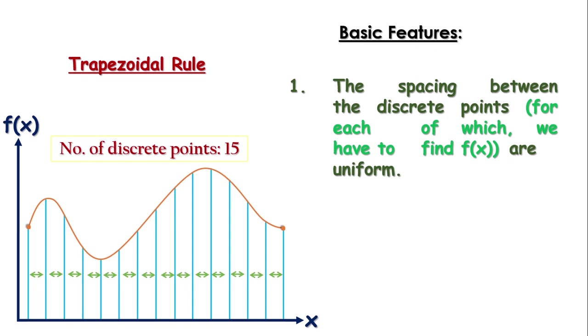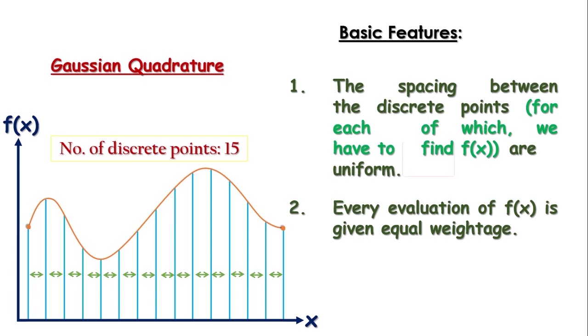Now, there is another class of integration method called Gaussian quadrature, where these two conditions are neither necessary nor even desirable. Now, for integrals on the domain minus 1 to plus 1, this approach is called Legendre quadrature method.